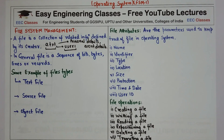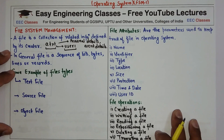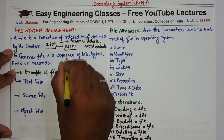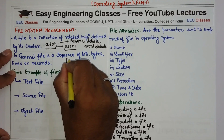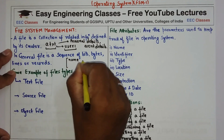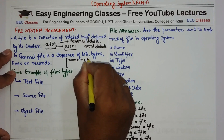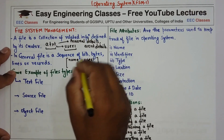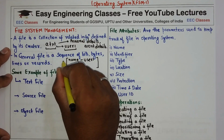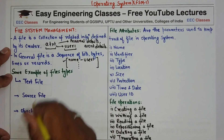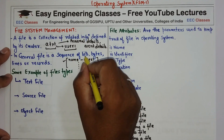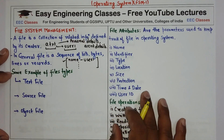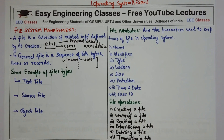In general, a file is a sequence of bits, bytes, lines, or records. For example, 'a.txt' may look like: name, user one, and so on — a sequence of lines. Similarly, you can have a sequence of bits, bytes, and records. This is a basic introduction of file: a file is a collection of related information created by its user.